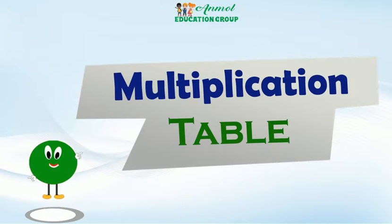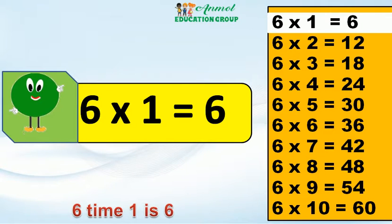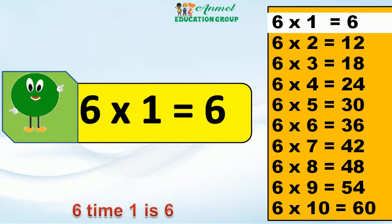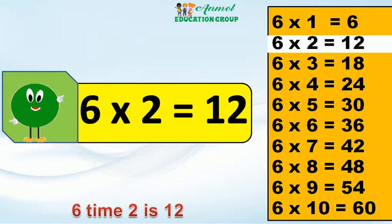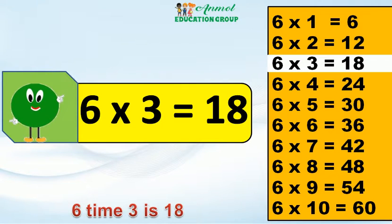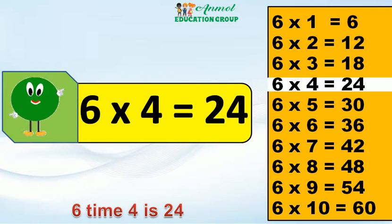Multiplication table — table of 6. 6 x 1 is 6. 6 x 2 is 12. 6 x 3 is 18. 6 x 4 is 24.